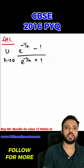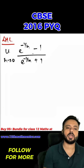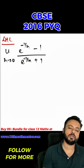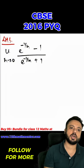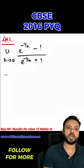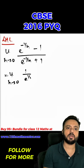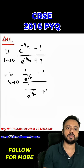LHL will be the limit as h tends to zero of e raised to the power negative one by h minus one, upon e raised to the power negative one by h plus one. Basically I've replaced zero with zero minus h in calculating the LHL. So now I can write this as one upon e raised to the power one by h, minus one, upon one by e raised to the power one by h plus one.